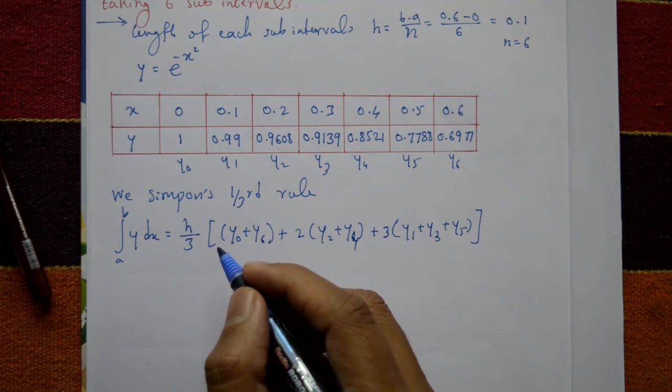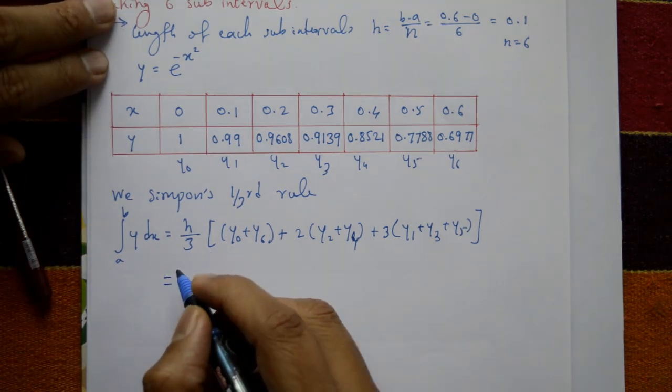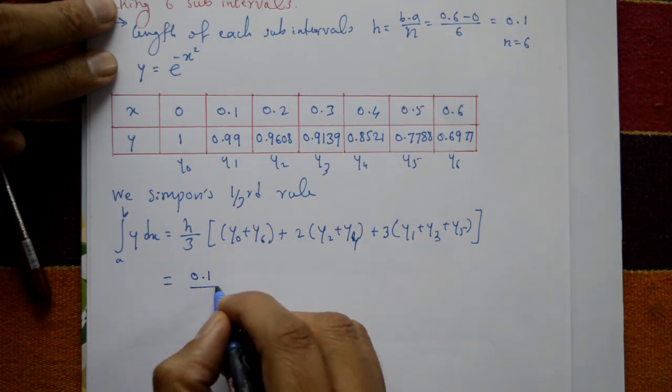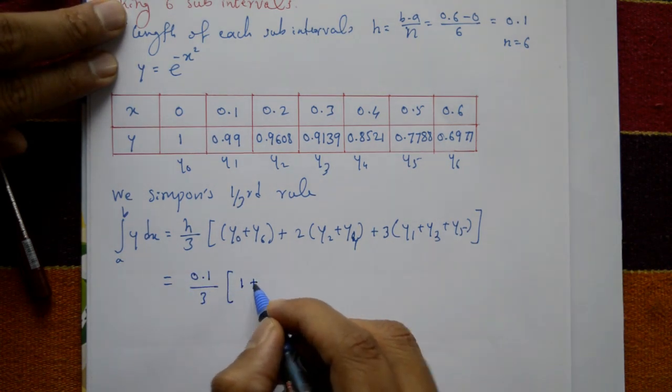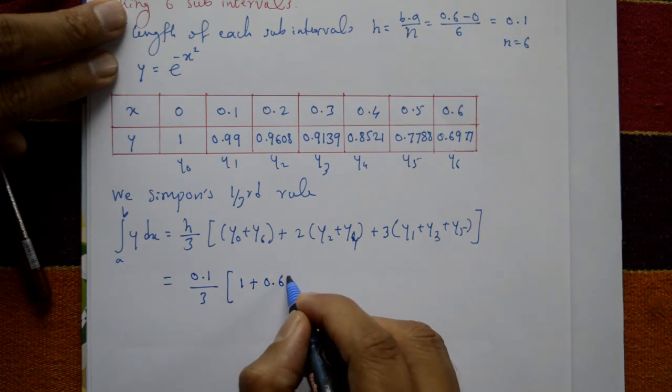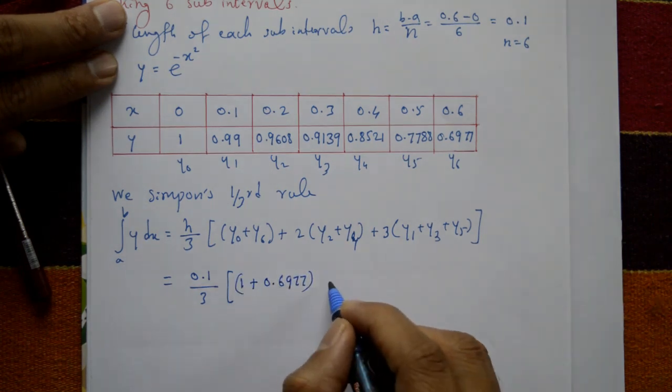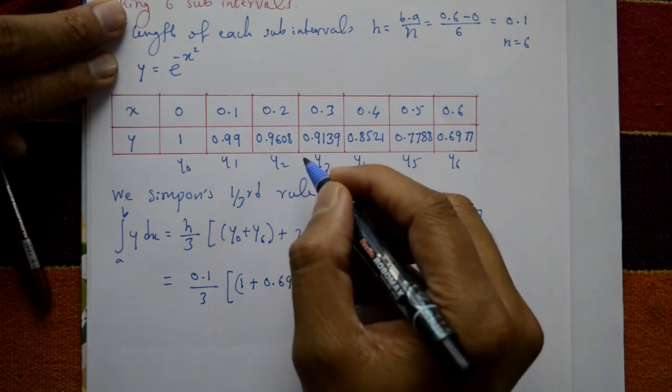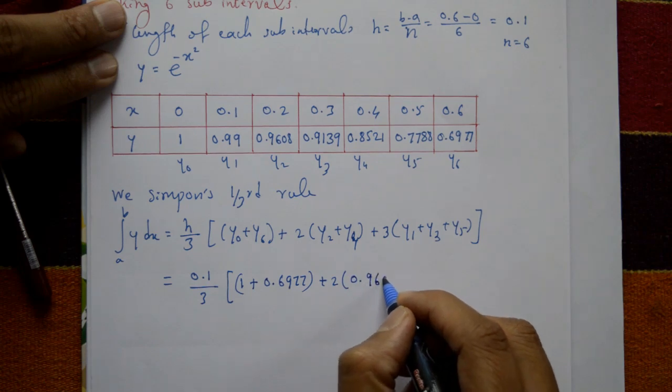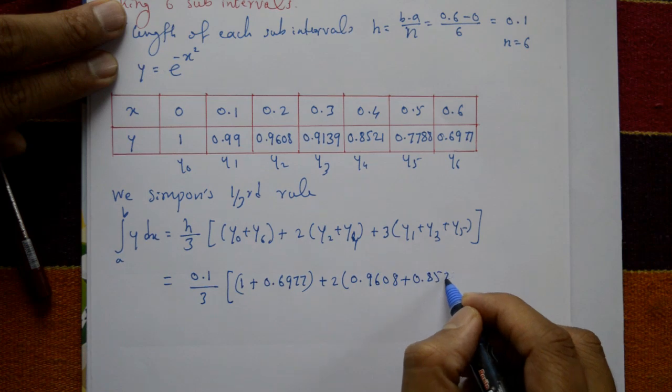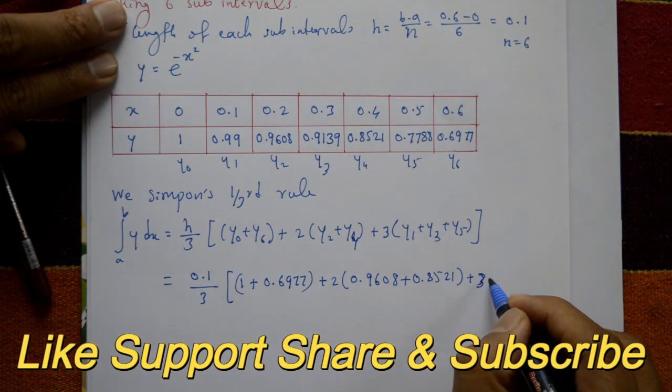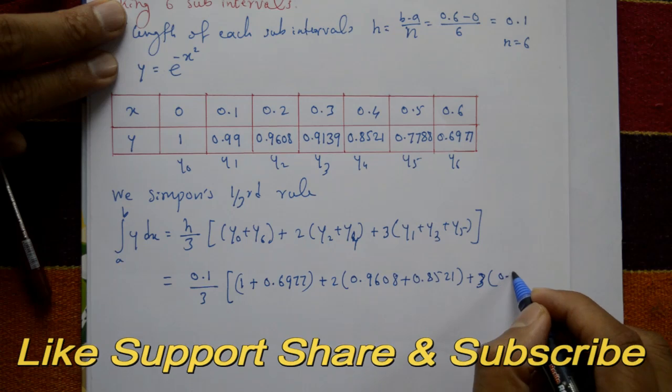Now substitute the values. h value is 0.1 divided by 3. y0 is 1 plus y6 is 0.6977. Plus 2 times the even numbers: 0.9608 plus y4 is 0.8522.